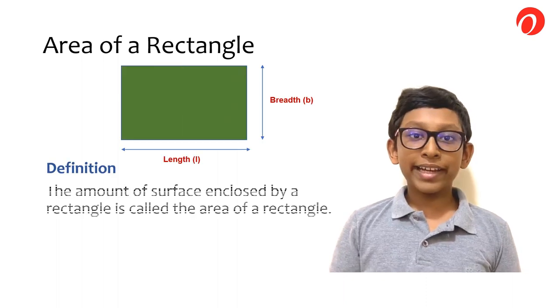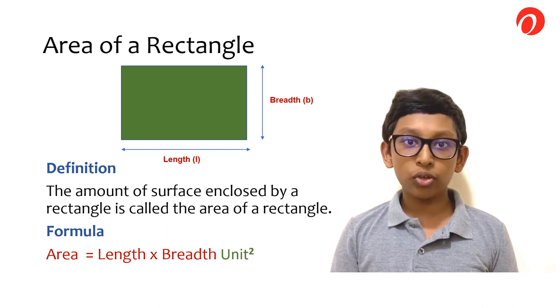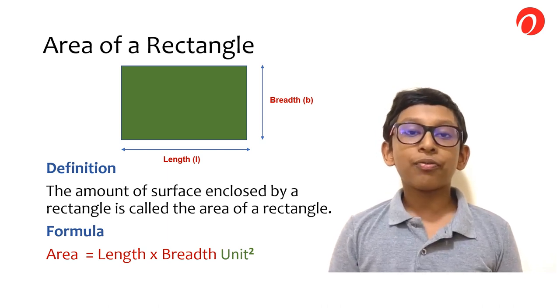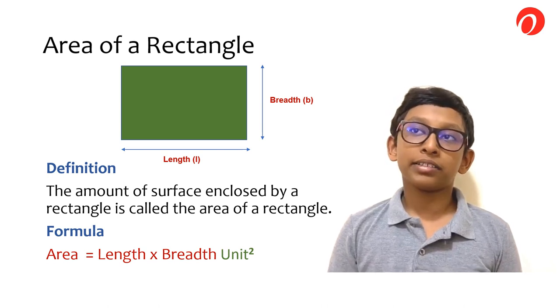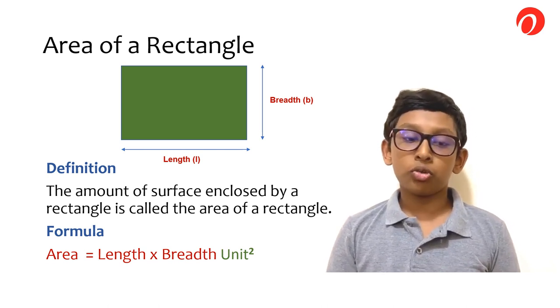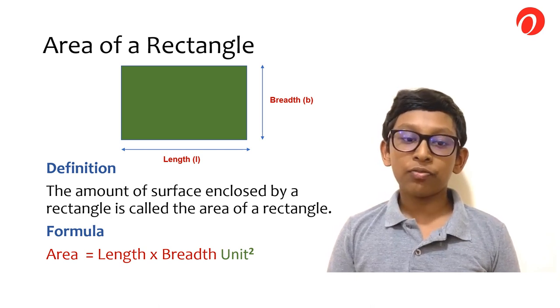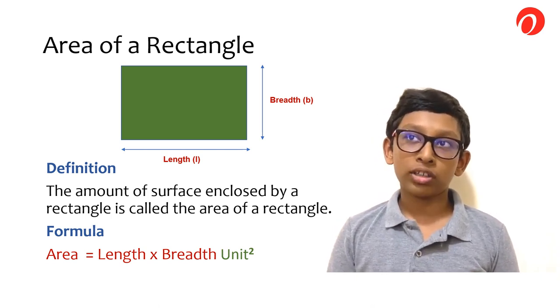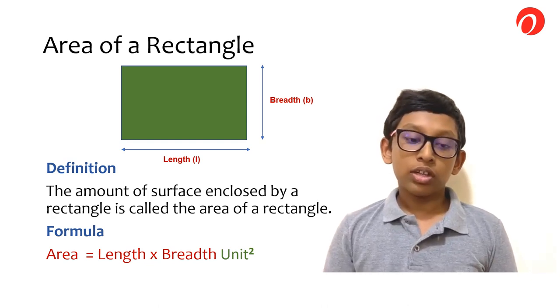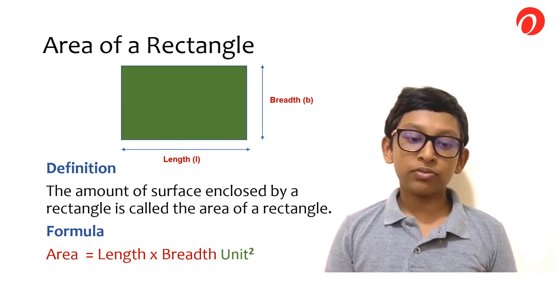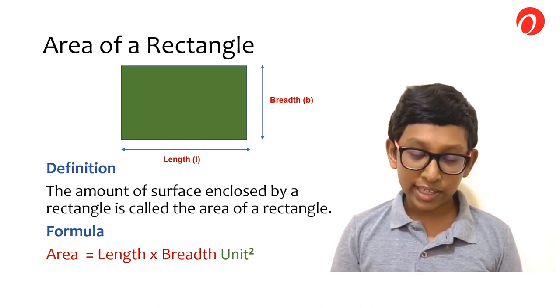The area of a rectangle can be defined as the amount of surface enclosed by a rectangle. The formula is length times breadth and the unit squared. For example, if I have a rectangle that is 5 cm long and 3 cm wide, 5 times 3 is 15. So the area for the rectangle is 15 cm².